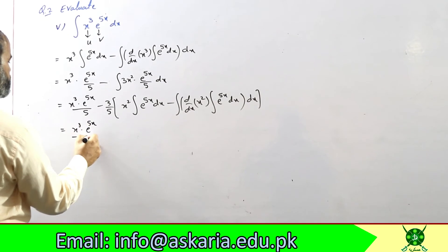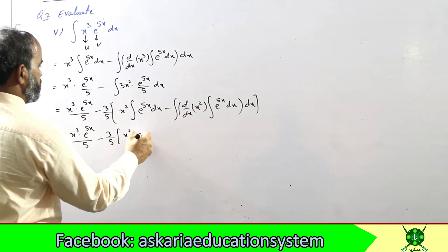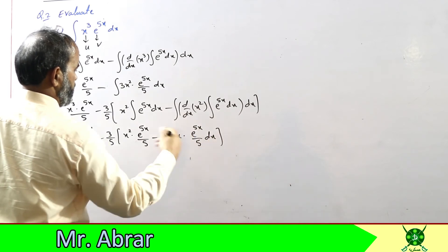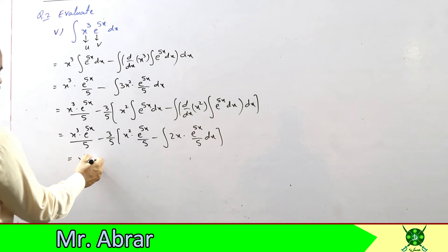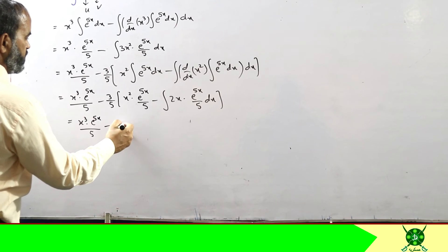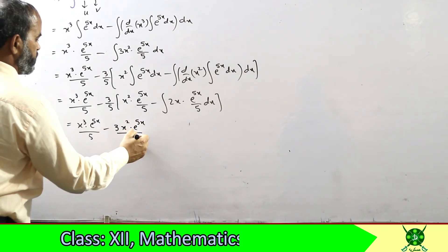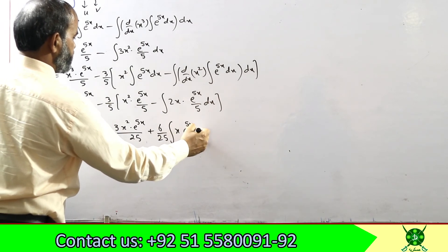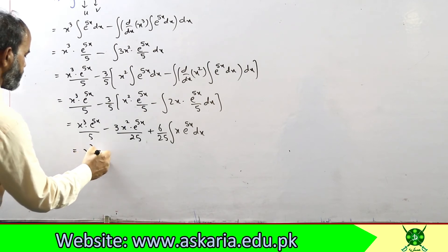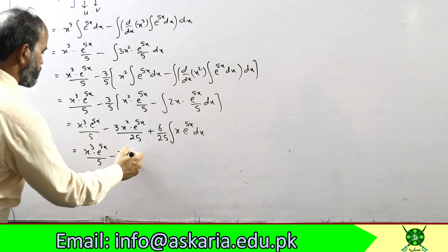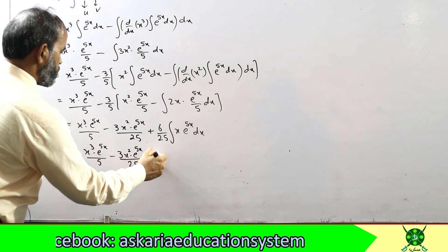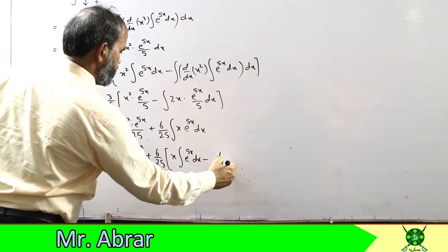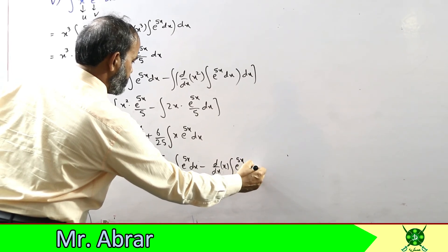x³·e^(5x)/5 minus 3/5 · [x²·e^(5x)/5 minus integral 2x·e^(5x)/5 dx]। next step से पहले जितनी brackets हैं वो open कर दें ताकि question आसान form में रहे, नहीं तो brackets confuse करेंगी। आजाएगा: minus 3x²·e^(5x)/25, minus minus plus, 3·2/(5·5) = 6/25 integral x·e^(5x) dx।